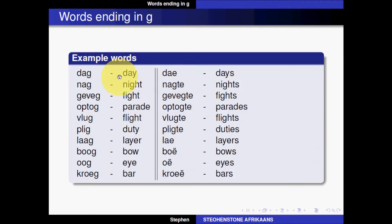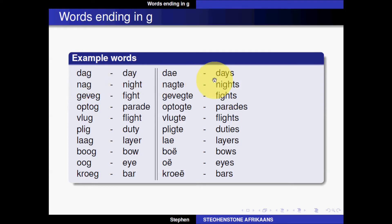Let's look at a few words that end in this G sound and see what their plurals do. There are some exceptions among them as well, making it appear slightly complicated, but as far as the language as a whole goes, it's not really that bad. The English word 'day' in Afrikaans is 'dag,' and its plural 'days' in Afrikaans is 'dae.'